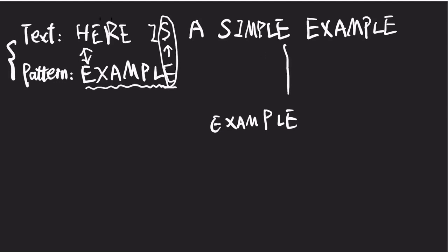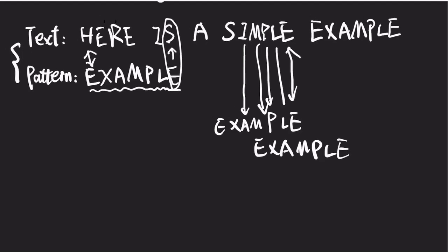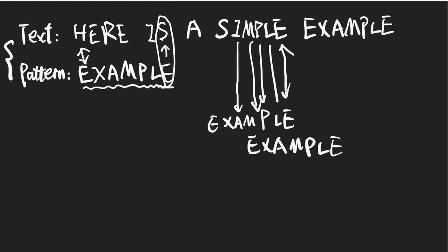So this time E is the same, P-L same, P same, M same, and I is different. According to the bad character rule, we need to skip the whole pattern string to the right. But can we do better? The answer is yes, because we have a second rule: the good suffix rule.